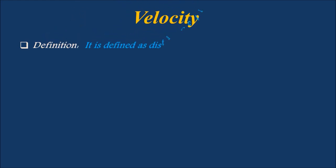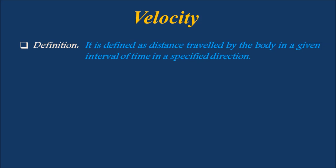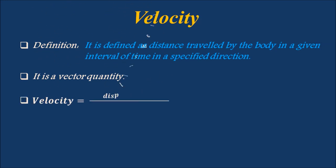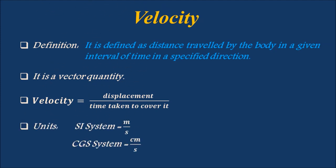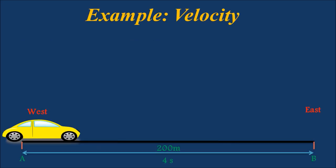Velocity is defined as the distance traveled by the body in a given interval of time in a specified direction. Velocity is a vector quantity as it has both magnitude and direction. Velocity is expressed as displacement divided by the time taken to cover it. In the SI system, velocity is expressed as meters per second, and in the CGS system as centimeters per second.